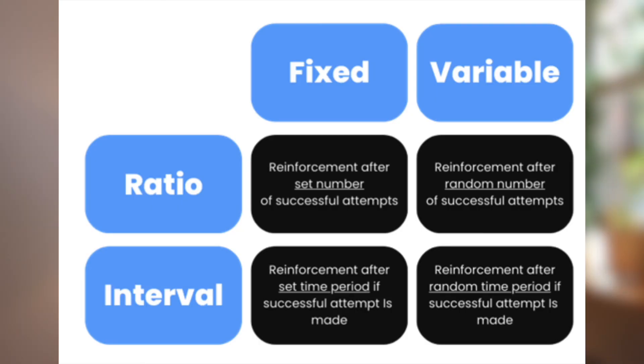So you've got fixed and variable, and you've got ratio and interval — those are the different ways you can classify reinforcement schedules, but they're actually kind of mixed together. If you put fixed and variable on two ends of a spectrum and ratio and interval on another, you end up with four different types of reinforcement schedules. You can pause and read what fixed ratio versus variable ratio, et cetera, each one means.